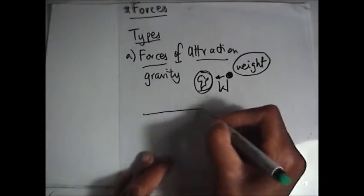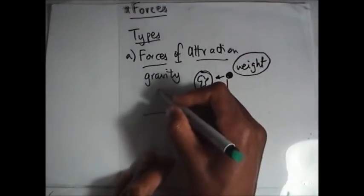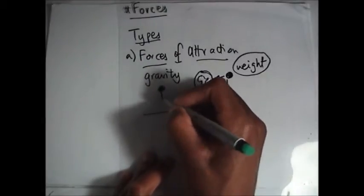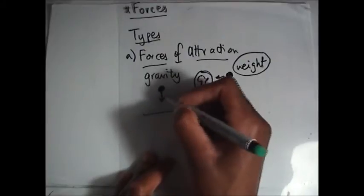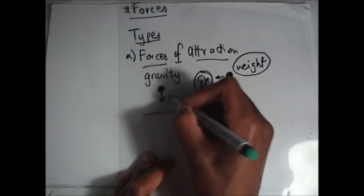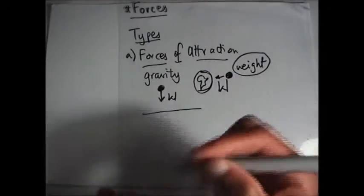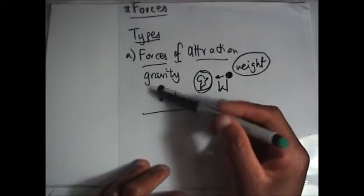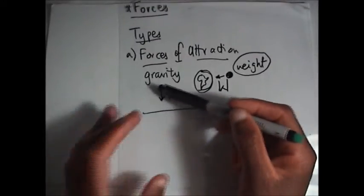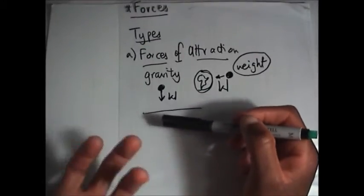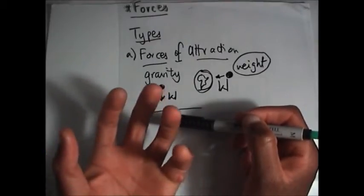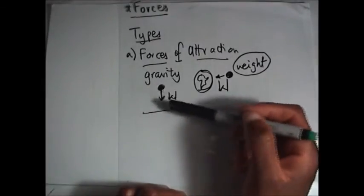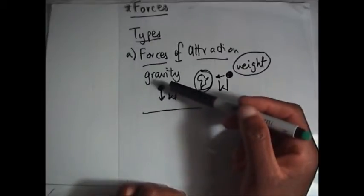Imagine you are on Earth. If you are holding something heavy, you say it's heavy because of the effect of weight. An object is heavy because it is being attracted towards the ground — that's why it's heavy. When you hold an object in your hand, it feels heavy because of the effect of this force called weight.